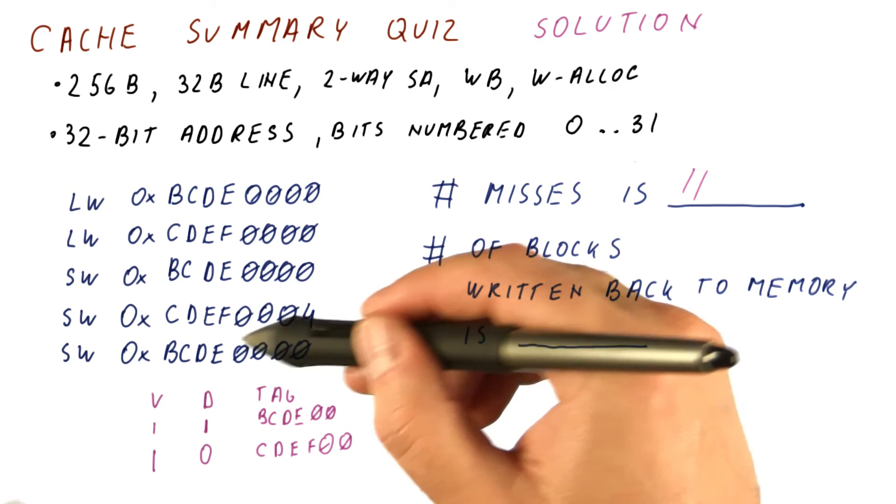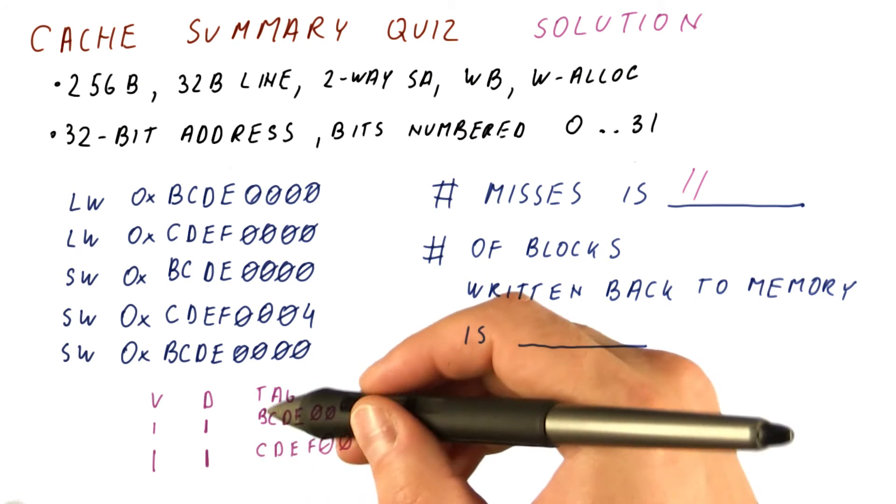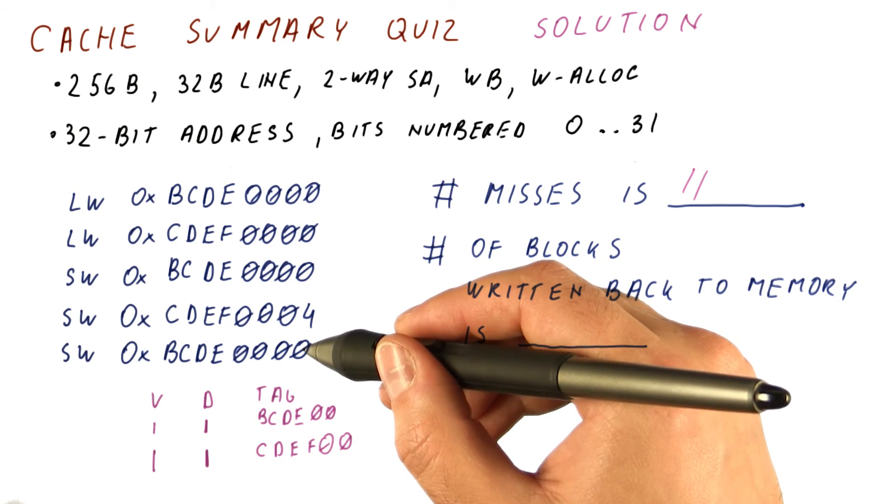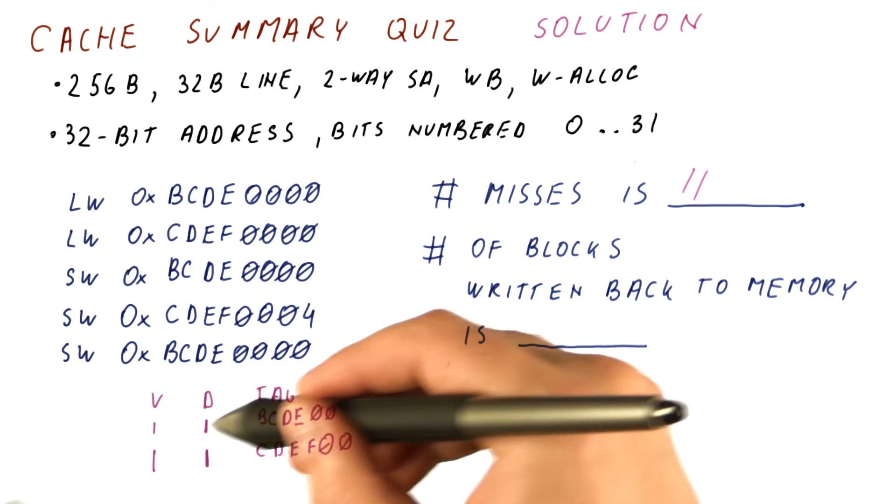Next, we have a store to another word in the same block. So this block becomes dirty, and then we have a store again to B, C, D, E. So it's just a hit that sets this dirty bit again to one.